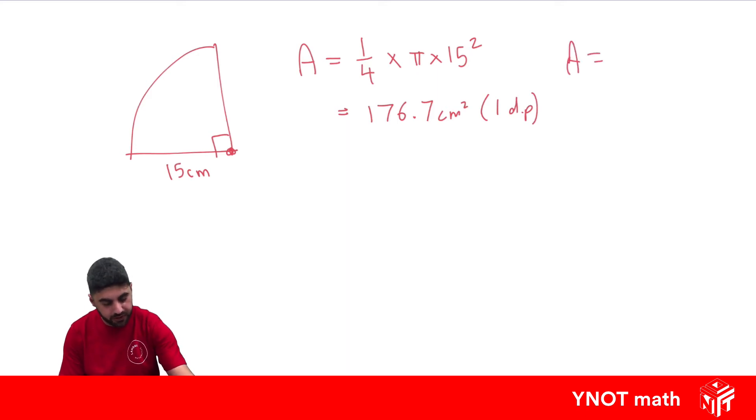Or you could use the angle at the middle to find the area. This is a right angle, which means it's 90 degrees. So you could have 90 over 360 degrees times pi times the radius squared. And this would also give you 176.7 centimetres squared.